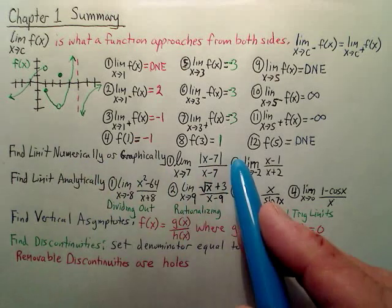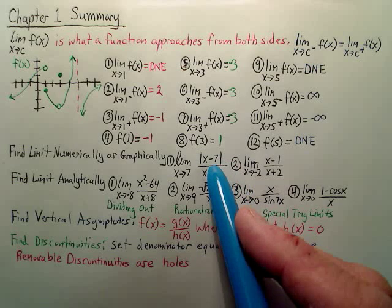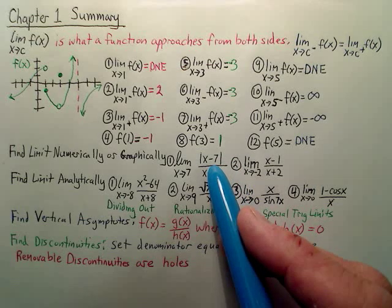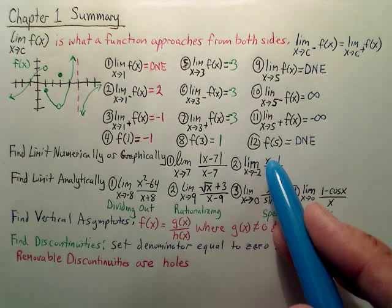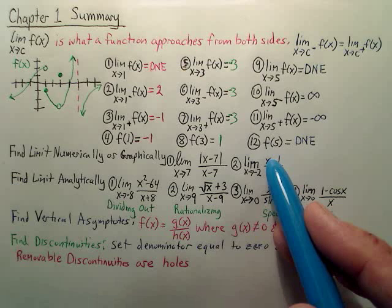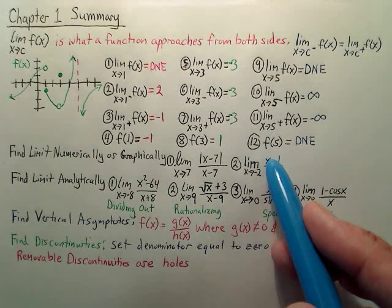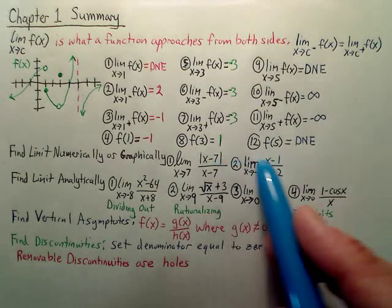So basically with these, I usually do numeric because without a graphing calculator, you can't really do graphical unless you know what it looks like. So these are both probably for you going to be numeric, meaning a table. You make a table, you crunch it from both sides, see what you're getting. You just got to make a table.